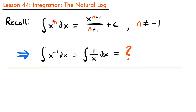When we first learned the power rule for integration, we said that the integral of x to the power of n dx was equal to x to the power of n plus 1, divided by that new exponent n plus 1, plus c. But that only worked as long as n was not equal to negative 1. So we did not know how to take the integral of x to the negative first power, or 1 divided by x. But now, with the help of the natural log function, we can.